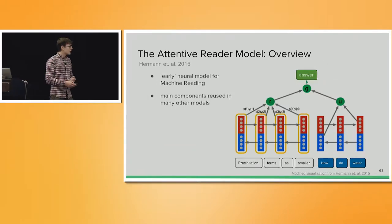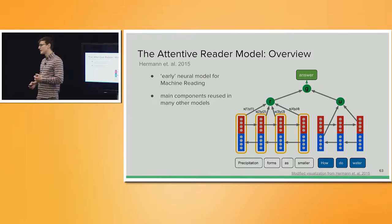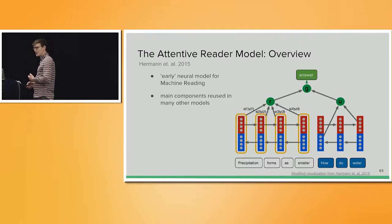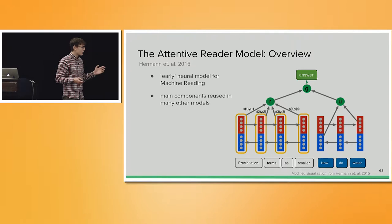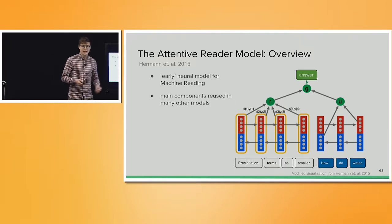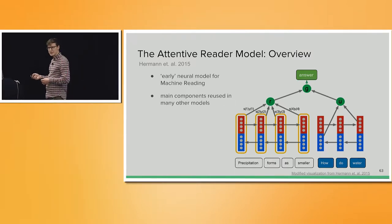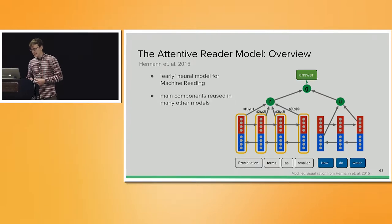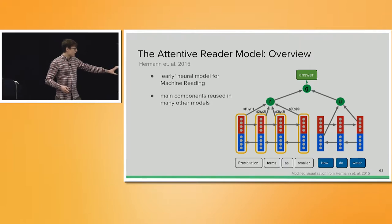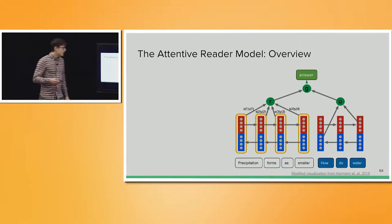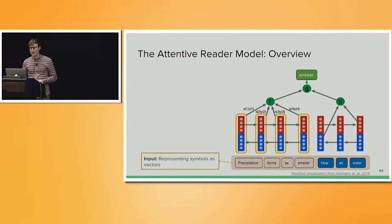The simpler architecture is the Attentive Reader Model by Karl Moritz Hermann and colleagues, which can be understood as an early neural model for machine reading. Since then, a lot of research in model architectures has happened. Nevertheless, many of the main components we see in this type of model are still used today, and we can find them in many other types of machine reading models.